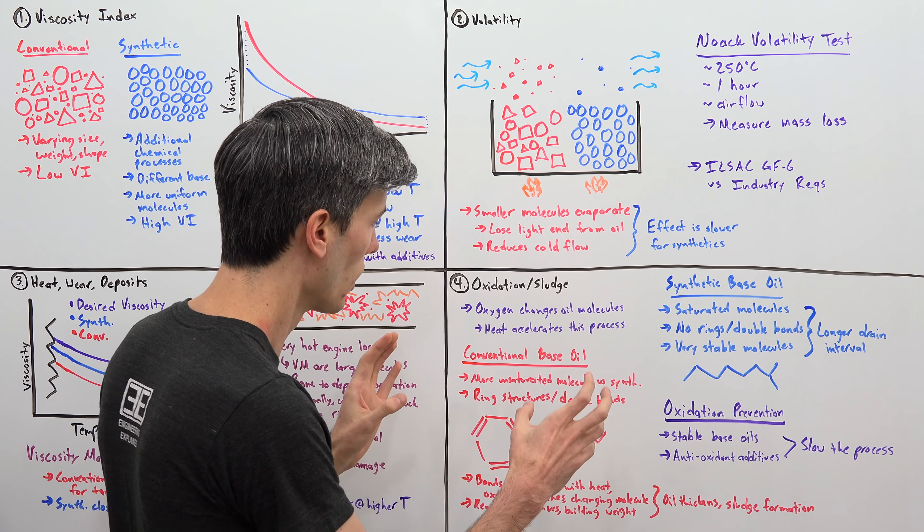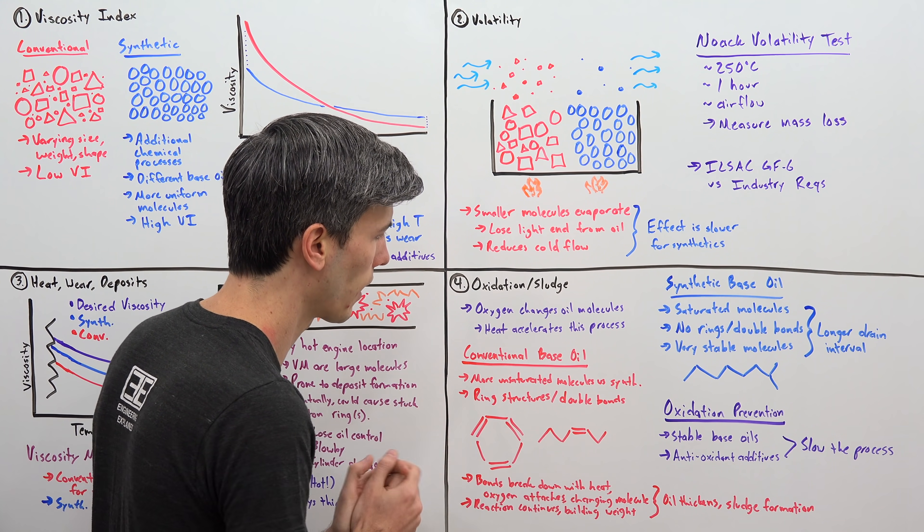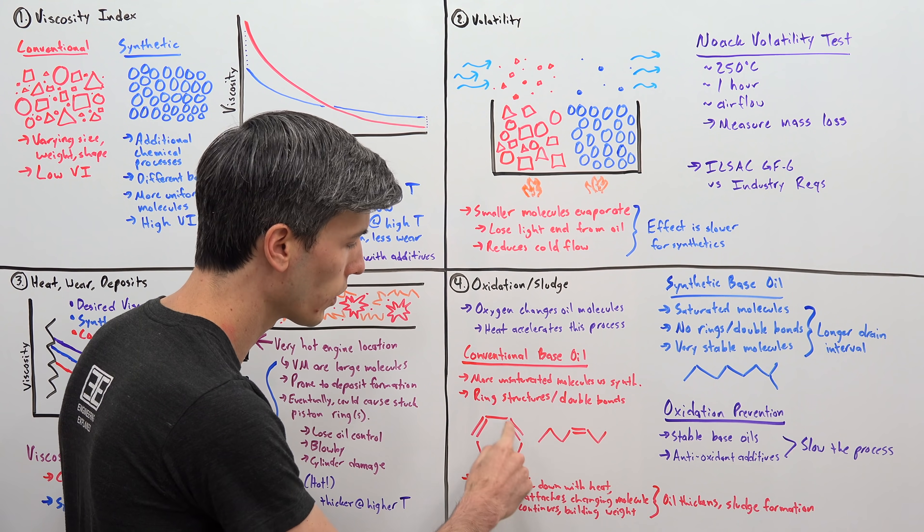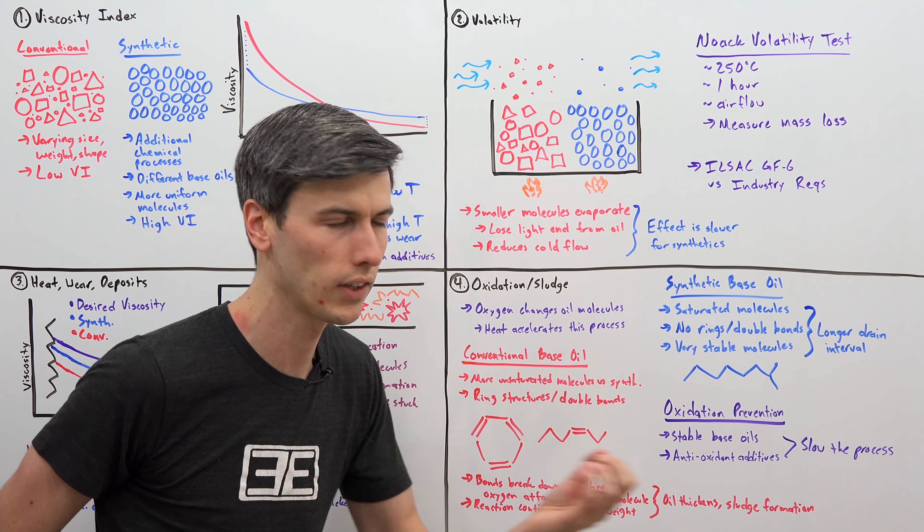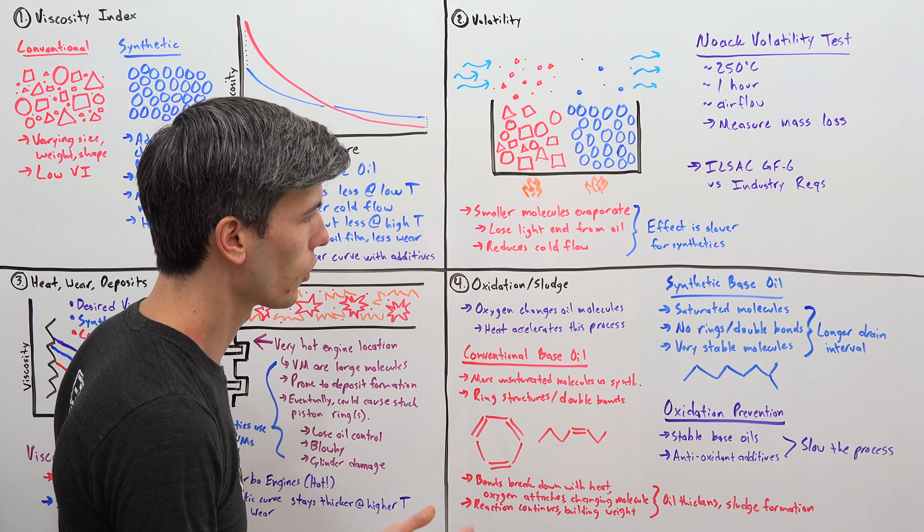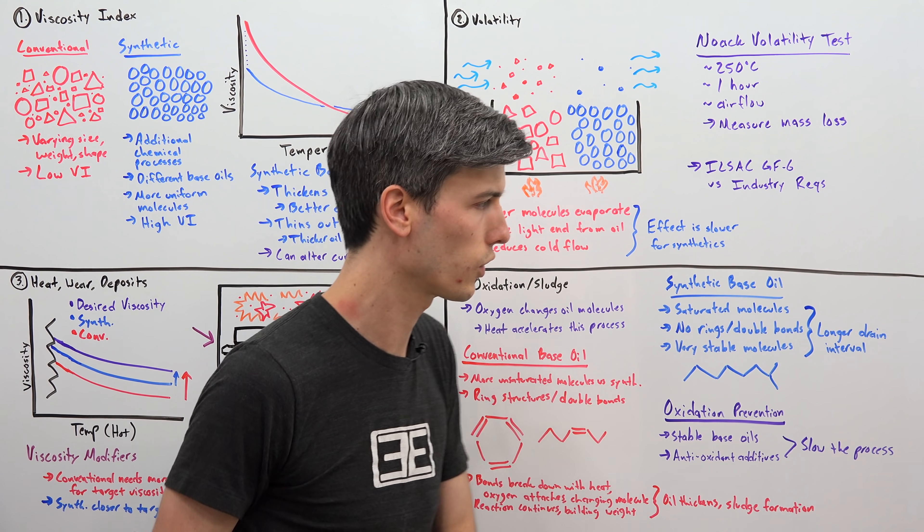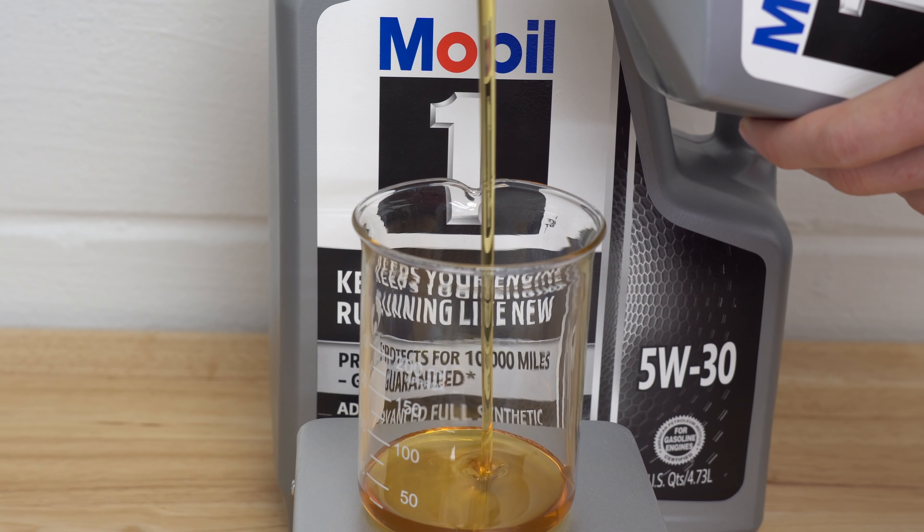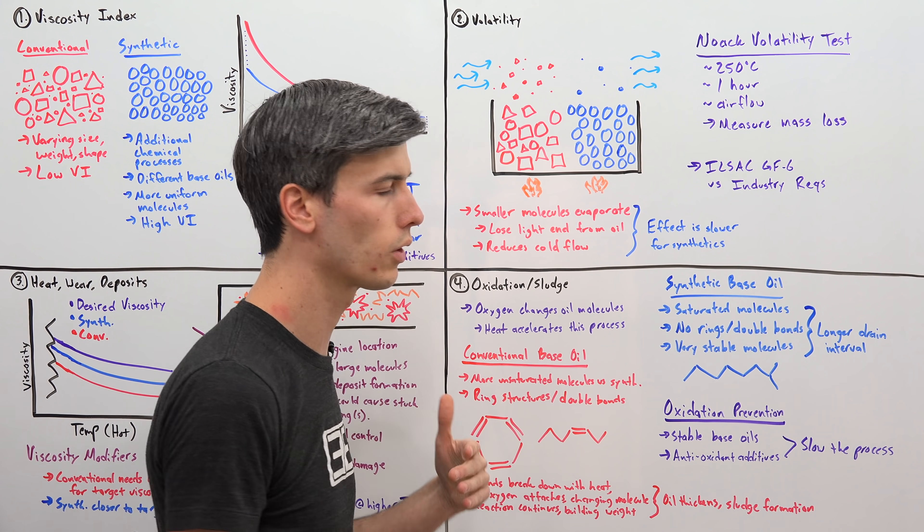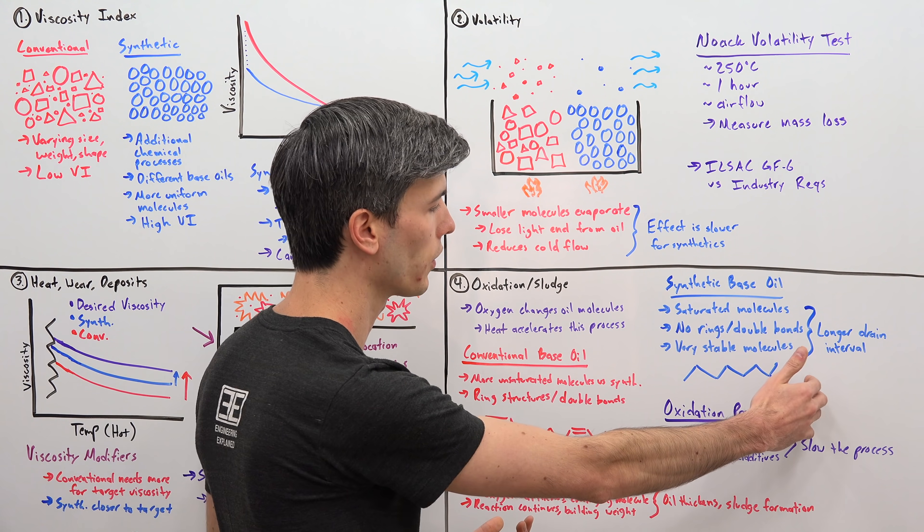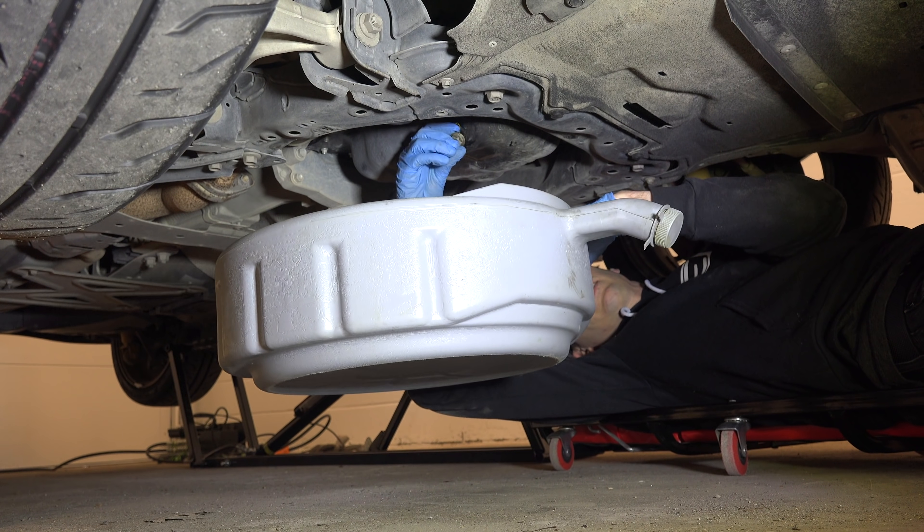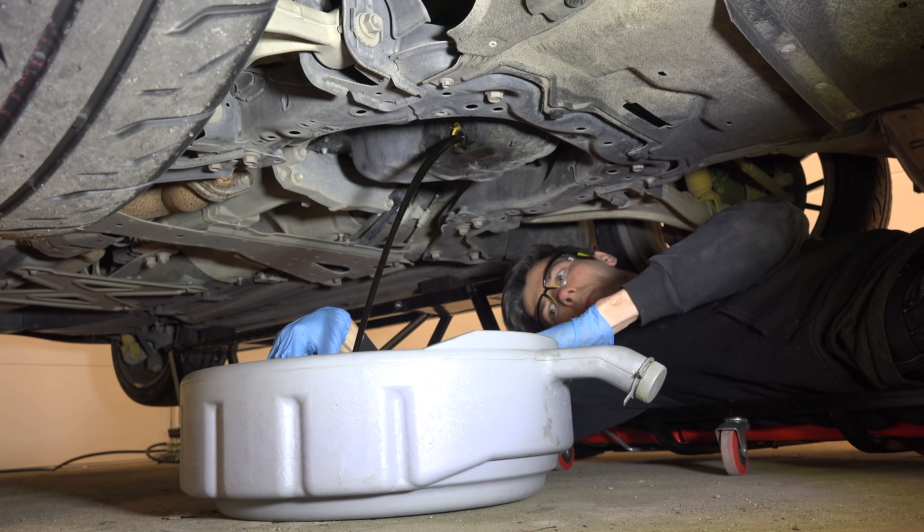The challenge with conventionals is that they're susceptible to this oxidation. With a synthetic base oil, what you do is you use saturated molecules, which don't have ring structures, they don't have double bonds, and so these are very stable molecules. It's much more difficult for oxygen to come get involved and start messing everything up. There's really two strategies you can use with oxidation. It's inevitable, it's going to occur regardless, but you use stable base oils, and then you can use additives, antioxidant additives to slow the process. Ultimately, you can prolong it using synthetic base oils and using antioxidant additives, but it will happen eventually, and so eventually you do have to change out that oil. But using this strategy, you're able to use longer drain intervals.